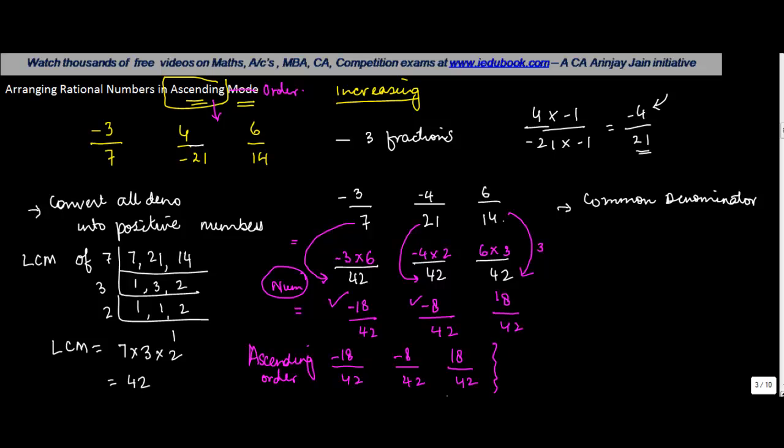If you were asked to do this in descending order, what will you do? You will put the largest number first, which is 18 upon 42. The entire mechanism, including LCM and all, will remain the same, but you will put the largest number first: 18 upon 42, then minus 8 upon 42, and the last one being minus 18 upon 42. That's how you arrange the rational numbers in ascending order.